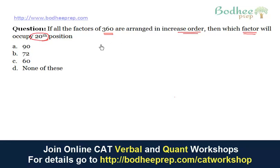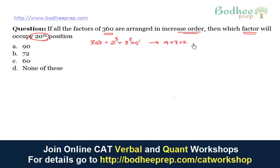Before we solve this question, let us find the total number of factors of 360. If we prime factorize 360, it will be 2³ × 3² × 5¹, so the total number of factors will be 4 × 3 × 2 = 24. It is also clear that 360 itself will be a factor, occupying the last position, that is the 24th position.